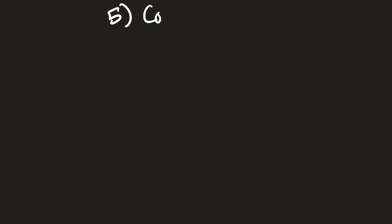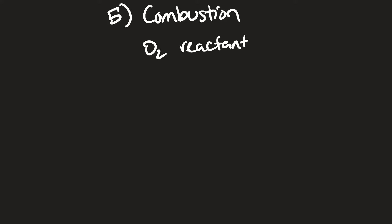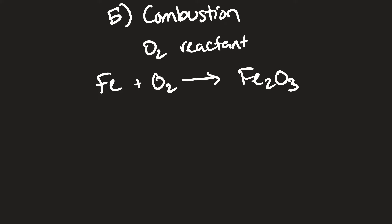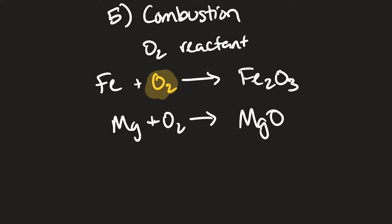The fifth type is combustion. Combustion is basically any reaction where O2 is a reactant. It's not always an explosion — for example, when iron rusts, O2 is a reactant, so that's a combustion reaction. Another example: magnesium reacts with oxygen to give magnesium oxide. O2 is a reactant, so it's combustion.